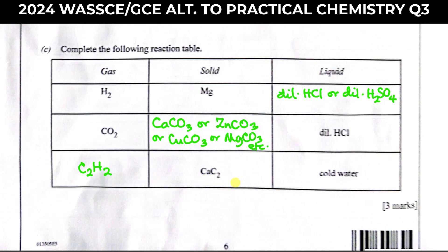The third row gives the liquid as cold water and the solid as calcium carbide. There is only one gas that would be produced here, and that is ethyne. Ethyne (HC≡CH), an alkyne, is produced from the action of cold water on calcium carbide.